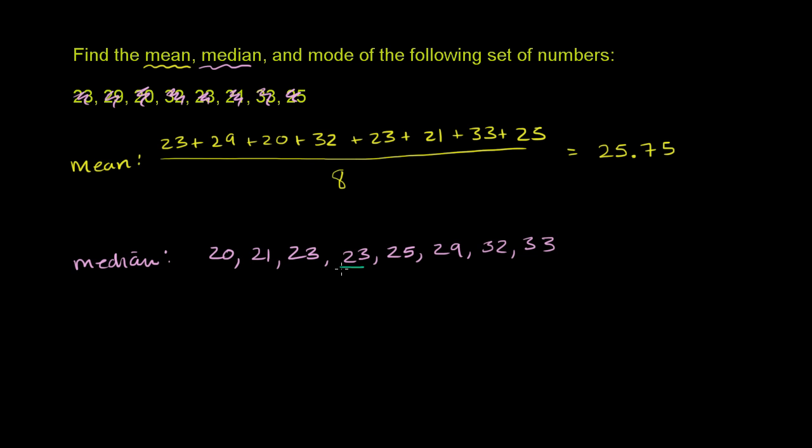So 23 will be one of them. That by itself can't be the median because there's 3 less than it and 4 greater than it. And 25 by itself can't be the median because there's 3 larger than it and 4 less than it. So what we do is we take the mean of these two numbers and we pick that as the median.